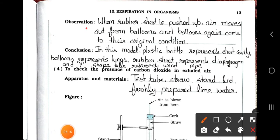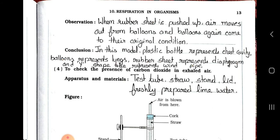Now see the next page. Observation: When rubber sheet is pushed up, air moves out from balloons and balloons again come to their original condition. See the conclusion. In this model, plastic bottle represents chest cavity, balloons represent lungs, rubber sheet represents diaphragm, and Y-shaped tube represents windpipe.